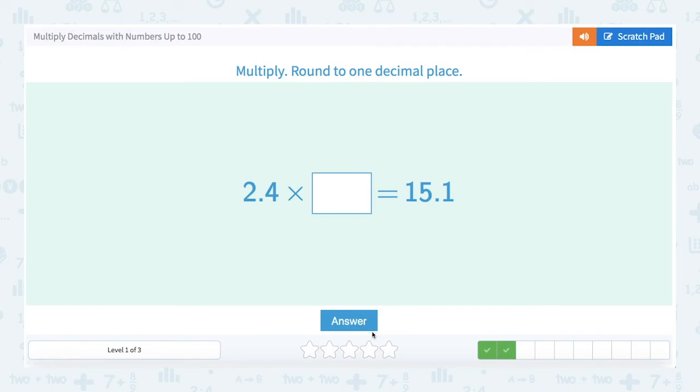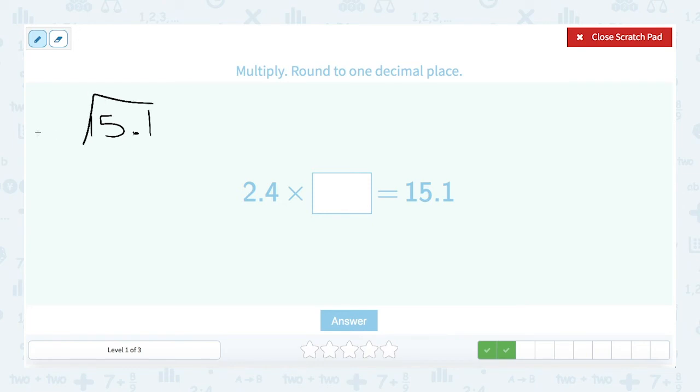Okay here's another one that's like the one that we just did where we know the product and we know one of the two factors. So we'll take our product, 15.1, and we'll divide by the factor that we know, 2.4. Again we have to take that decimal in the divisor and we move it to the end. So now that is 24. We moved it one place. So we're going to move this one place. And I'm going to extend this because we'll have some decimals to deal with. And I bring that straight up. So now the problem says 151 divided by 24.